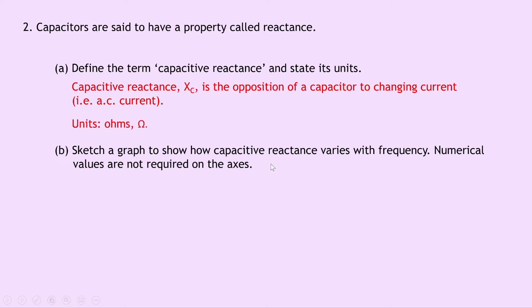Part B says to sketch a graph to show how capacitive reactance varies with frequency. Numerical values are not required on the axes. So your sketch should look something like this, with XC in ohms against frequency in hertz, and you have an exponentially decaying curve, a curve that goes down the way.